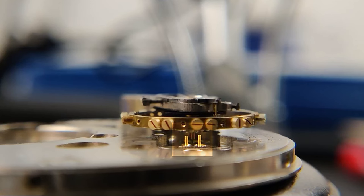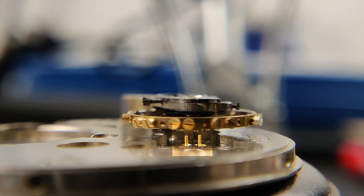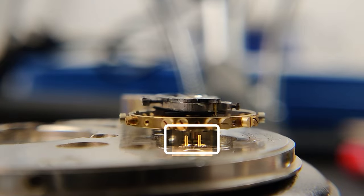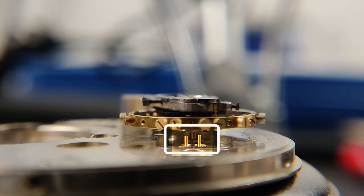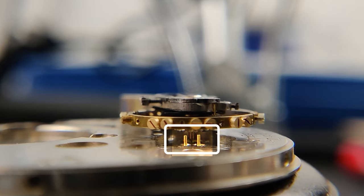One issue we can address right away is beat error. So as the balance settles down here, that purple jewel hanging between the two gold banking pins should come to rest right in between them. This ensures that the watch ticks and talks at equal intervals. And yeah, that looks good.